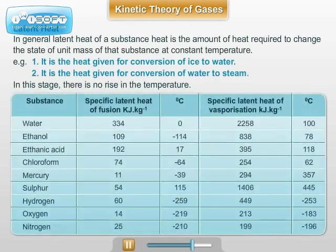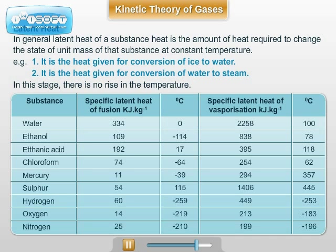Latent heat — in general, latent heat L of a substance is defined as the amount of heat required to change the state of unit mass of that substance at constant temperature. For example, it is the heat given during the conversion of ice into water, or the heat given during the conversion of water into steam. In this stage, there is no rise in temperature of the ice-water or water-steam combination, but the heat given is utilized to change the state.